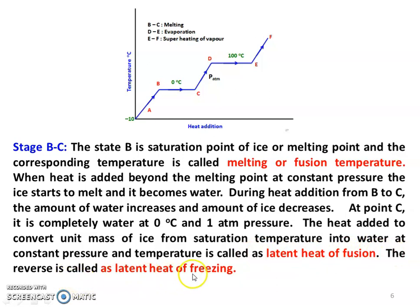The heat added to convert unit mass of ice from saturation temperature into water at constant pressure and temperature is called the latent heat of fusion. The reverse process is called the latent heat of freezing. During any phase change process — solid to liquid, liquid to vapor, vapor to liquid, or liquid to solid — the pressure and temperature remain constant.